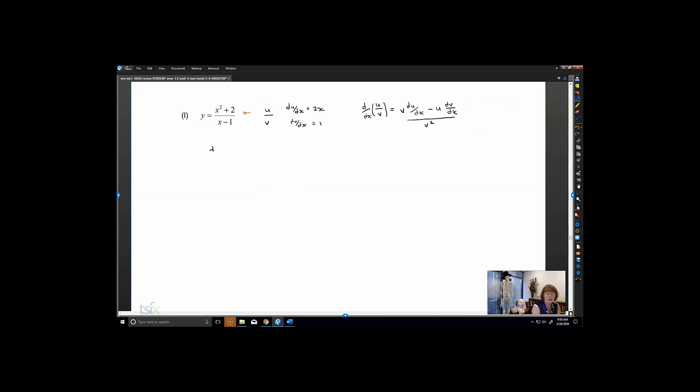dy/dx here is equal to our v value, which is x minus 1, times our du/dx, which is 2x, minus our u value, which is x squared plus 2, times our dv/dx, which is 1.